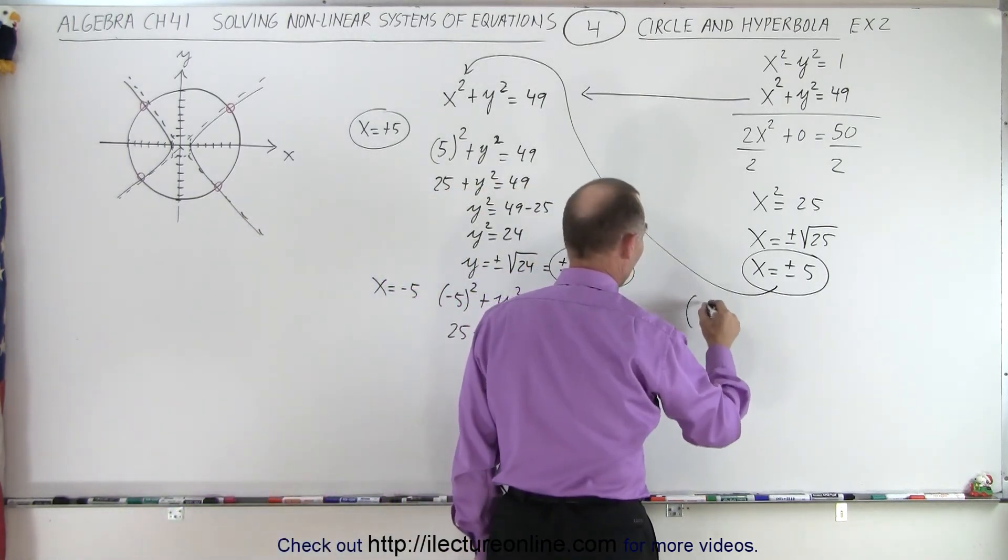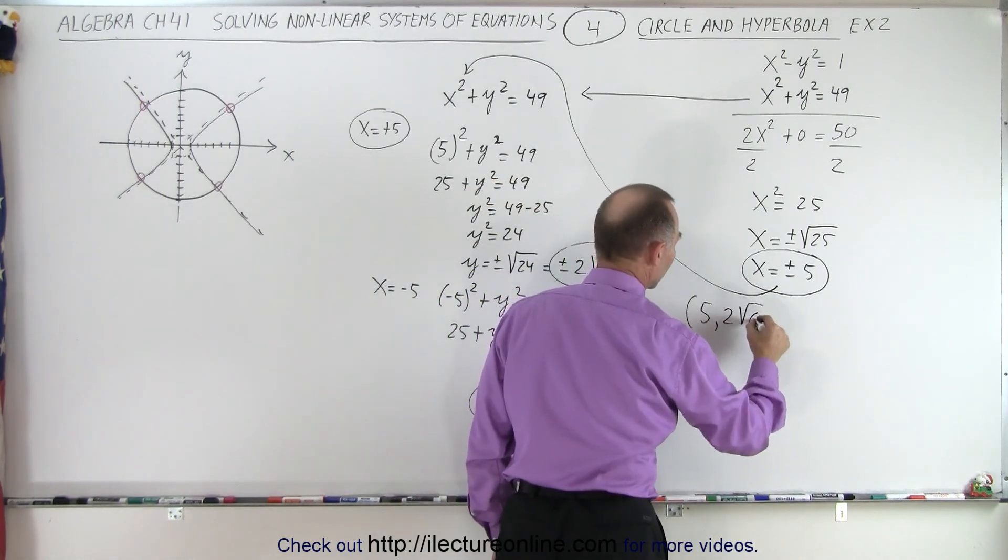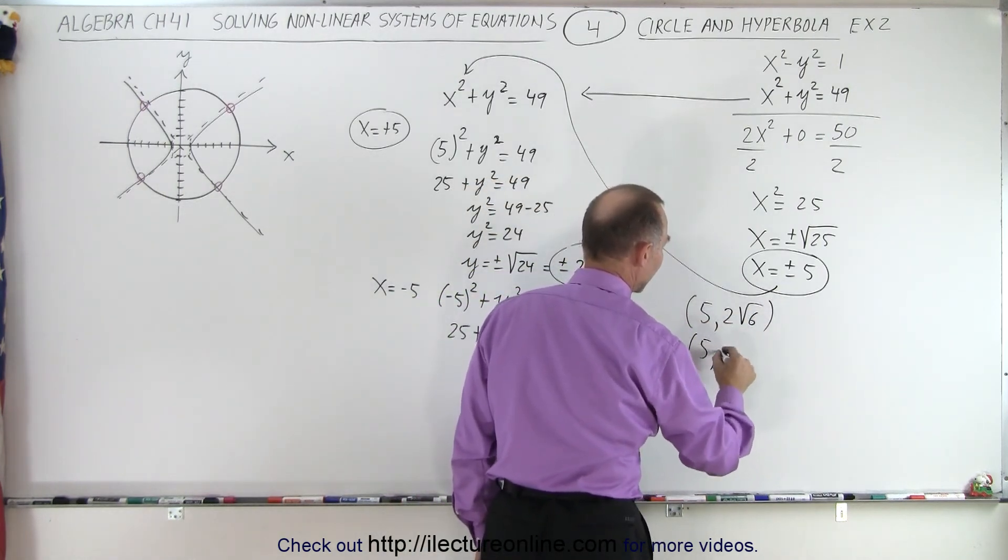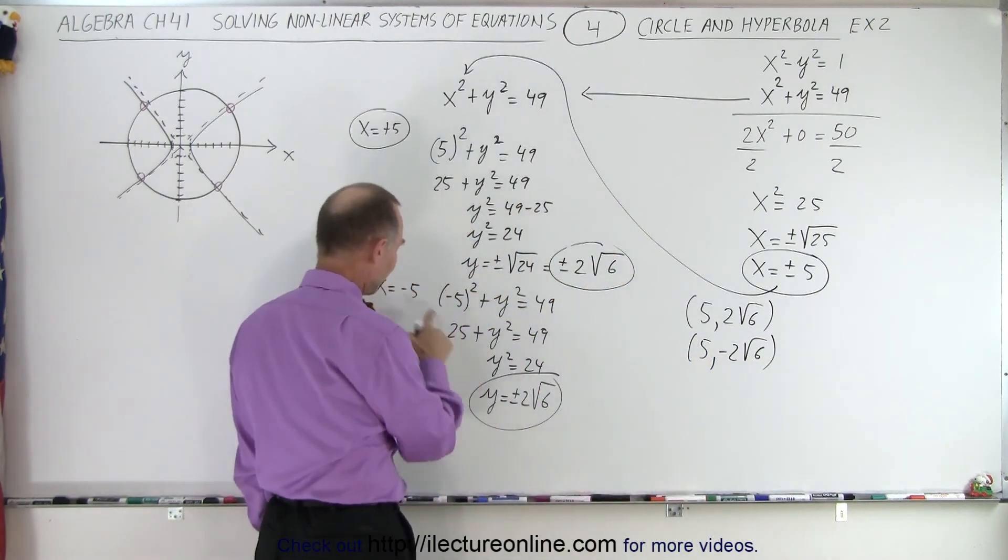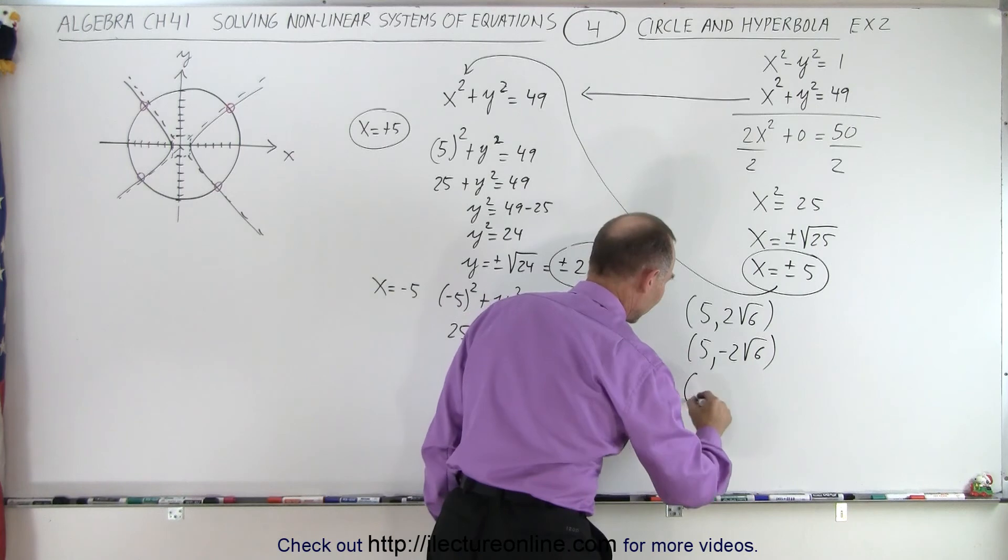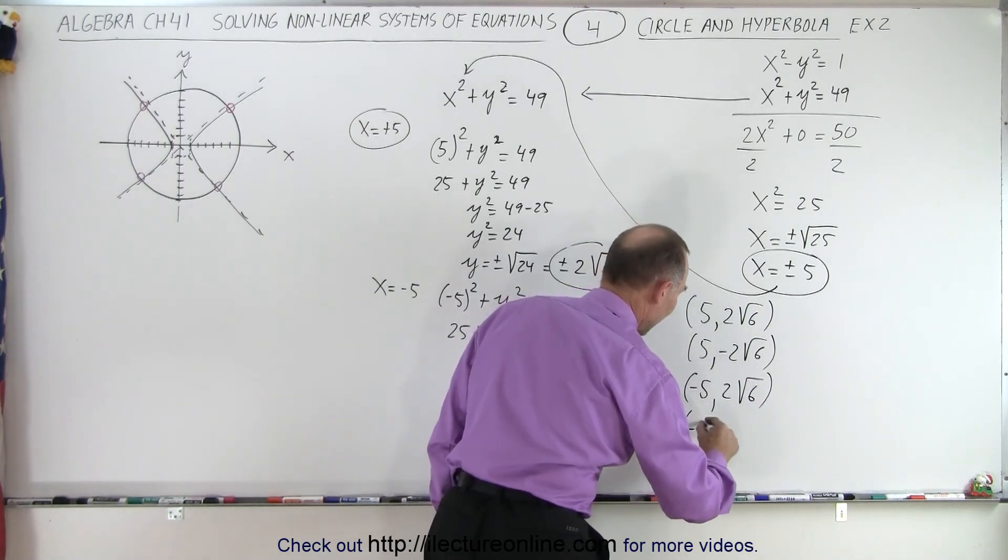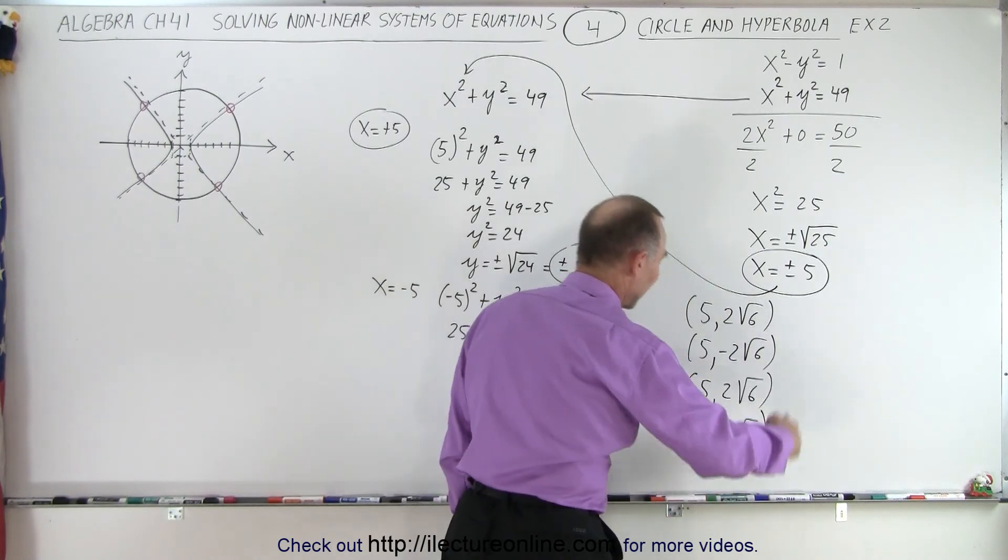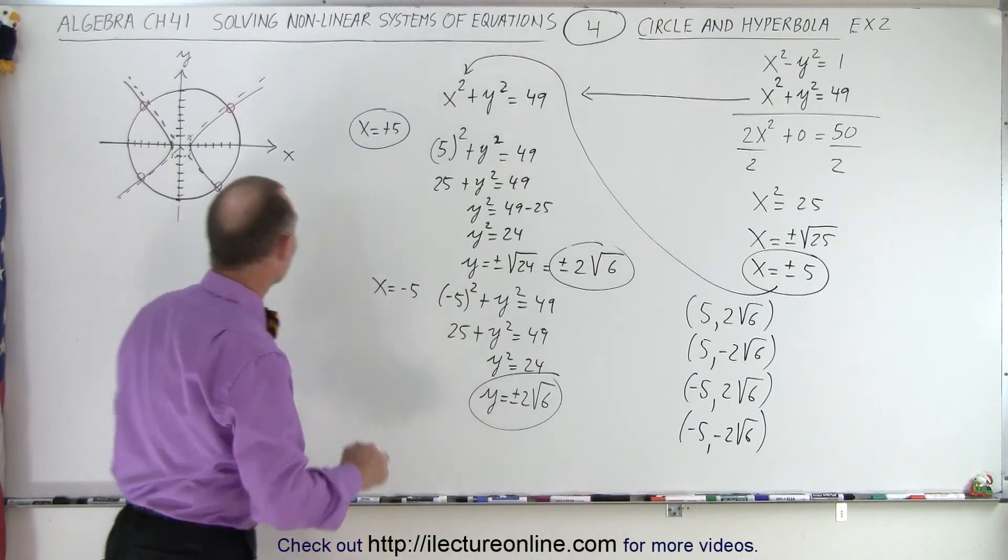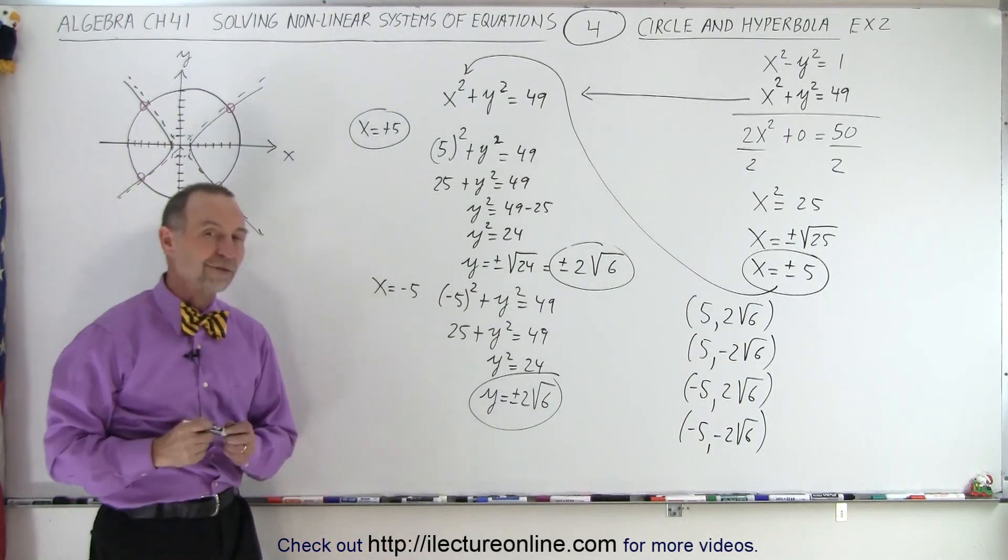we have 5 and positive 2 times the square root of 6. We have 5 and negative 2 times the square root of 6. And then we have the same but for x equals negative 5. So negative 5 and 2 times the square root of 6. And negative 5 and negative 2 times the square root of 6. And notice that set of solutions represents every one of the four intersections that we drew on our graph.